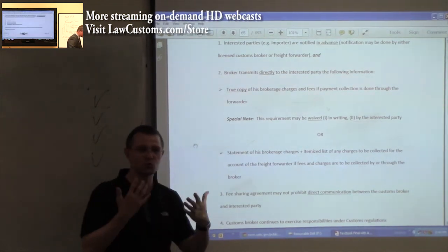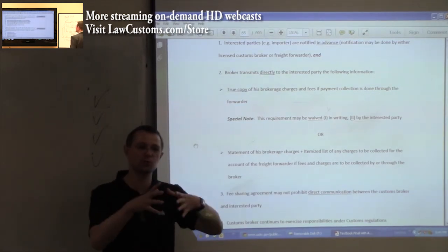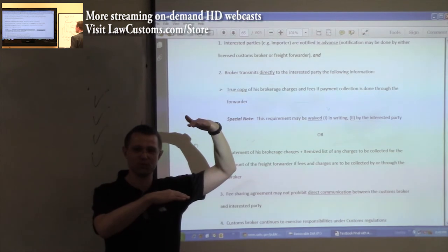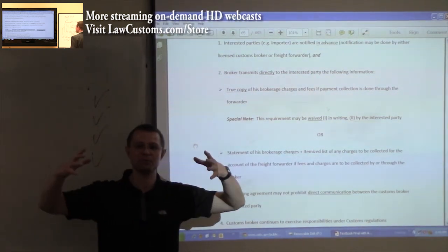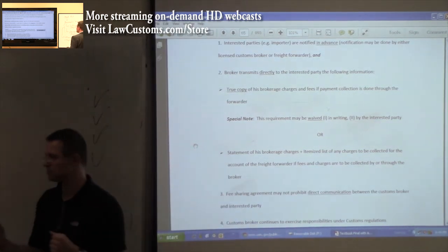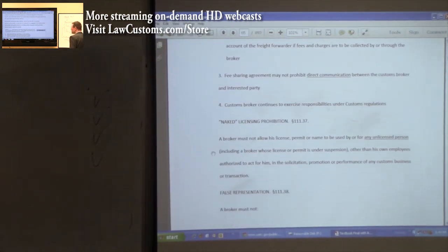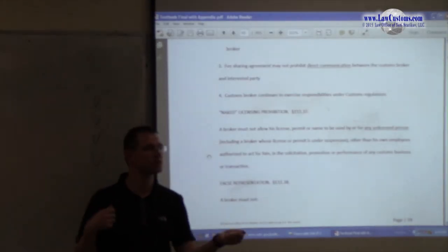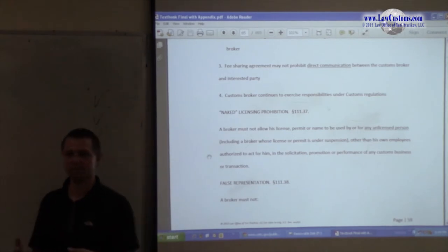So the true copy is not the one that you internally charge the freight forwarder. It's not the one that freight forwarder provides the importer hiding the margin of profit. But the one that is between freight forwarder and the customs broker. Everyone see this? Naked licensing, you cannot just get your license and let everyone use it without oversight. That's a no-no.